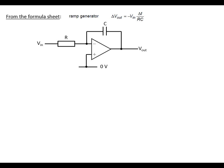Ramp generator: this is a circuit with a ramp generator. We've got a resistor on the input, we've got a capacitor on the feedback, and we've got a formula which is on the formula sheet. The triangle denoting a change: the change in V out is minus V in multiplied by the change in time divided by RC.